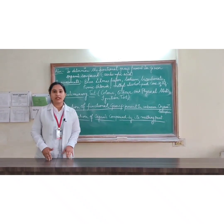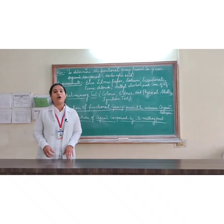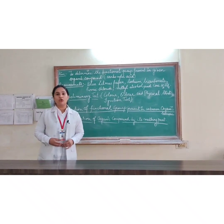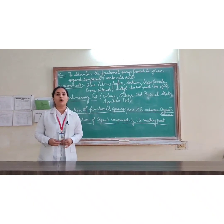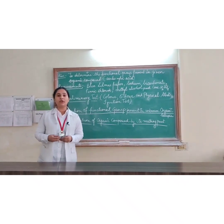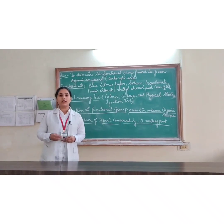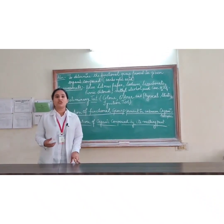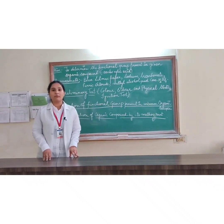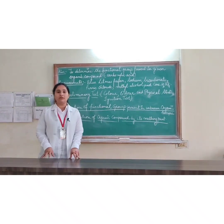We will start with the preliminary test. In the preliminary test, we check the color or odor of the organic compound. By the color we can get an idea which organic compound may be present. For example, beta naphthol has a chocolatey brown color. However, most organic compounds are colorless, so no basic information is obtained from this step.